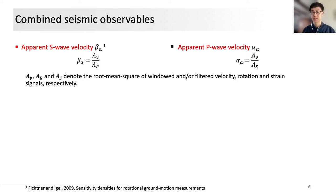To be more specific, the root-mean-square amplitude ratio between velocity and rotation is called apparent S-wave velocities, beta. Similarly, the apparent P-wave velocity can be defined with the velocity and strain components. To avoid division by zero, a time window for each individual quantity has to be applied.